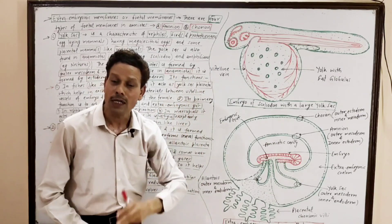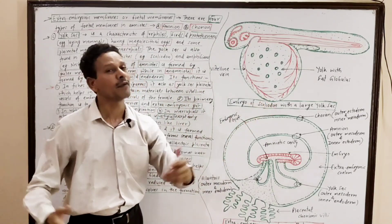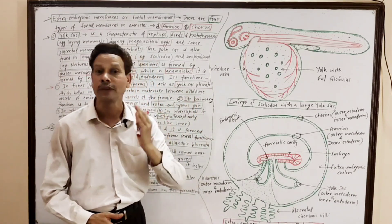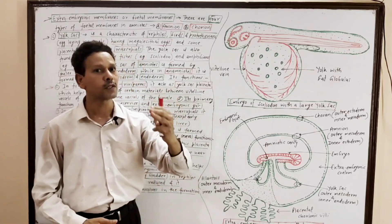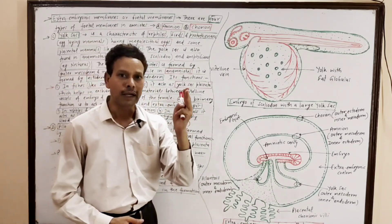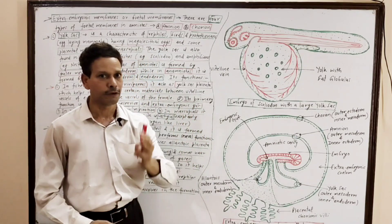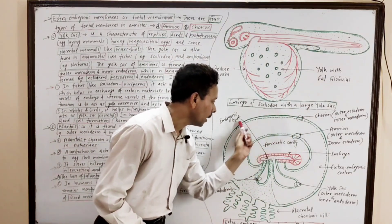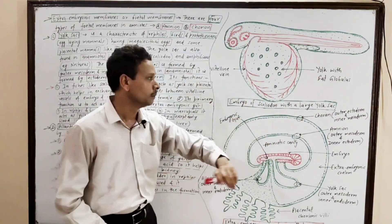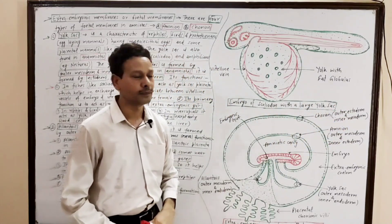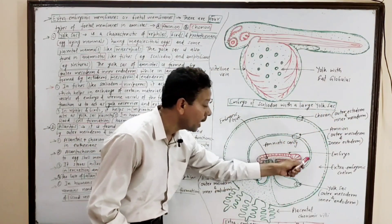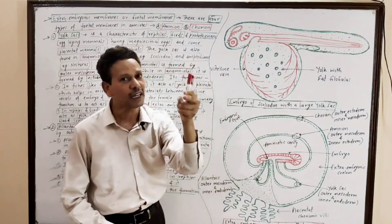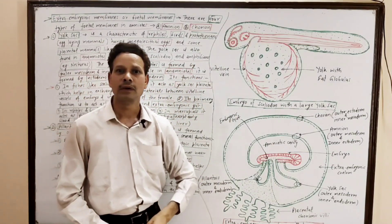In case of human beings, the allantois is greatly reduced, non-functional, and involves in furnishing the blood vessels of the placenta. To summarize: in amniotes like reptiles, birds, and mammals, there are four types of extra embryonic coats. The outer coat is the chorion, formed by outer ectoderm and inner mesoderm.